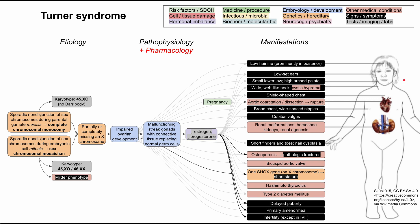The patient also has low-set ears, as you can see on that diagram. They'll have a small lower jaw and a high arched palate. They'll also have a wide, web-like neck — you can see this neck on the diagram is pretty thick and has a webbed appearance going out to the side toward the shoulder. Another issue is a cystic hygroma, which is a blockage in the lymphatic vessels that leads to a mass in the neck.